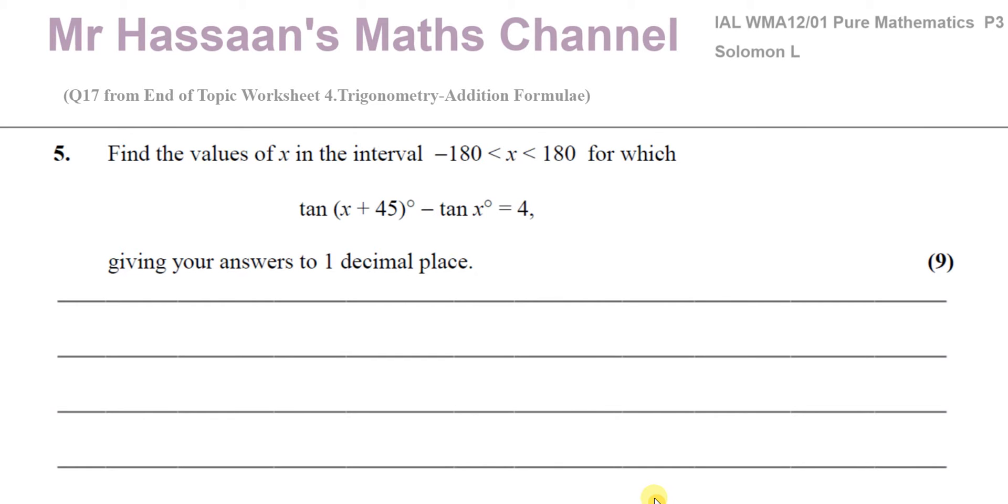So what I'm going to do is split this up into its parts. Now, please remember that you cannot expand this. The tan by itself doesn't mean anything. You can't say tan x plus tan 45. That's a very common error. So tan x plus 45 degrees does not give you tan x plus tan 45. You cannot do that. You have to use addition formulae.